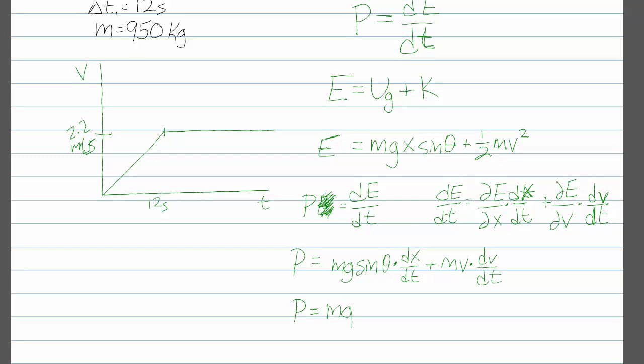All right, so power is going to be mgv sine theta, plus mva. All right, now we can go ahead and use this expression to find the specific powers that are asked for in the problem.